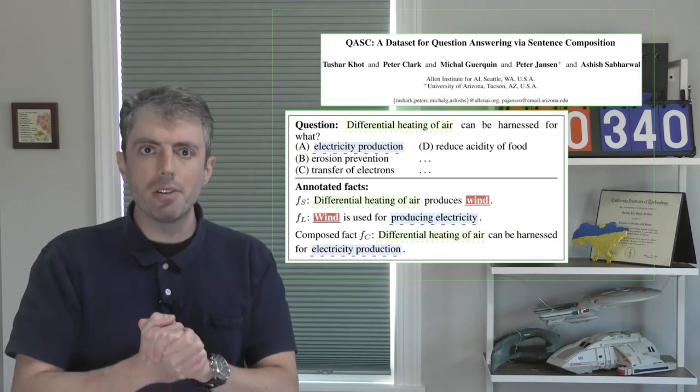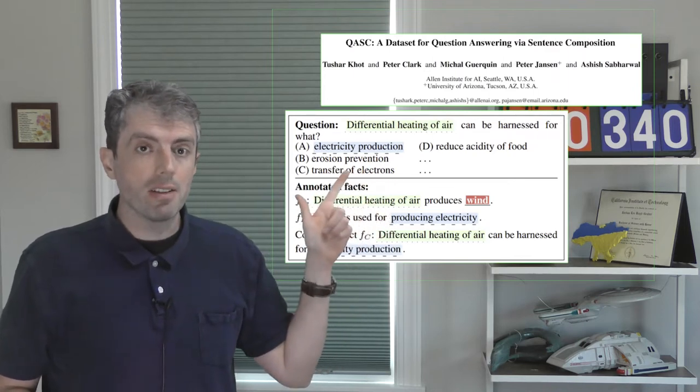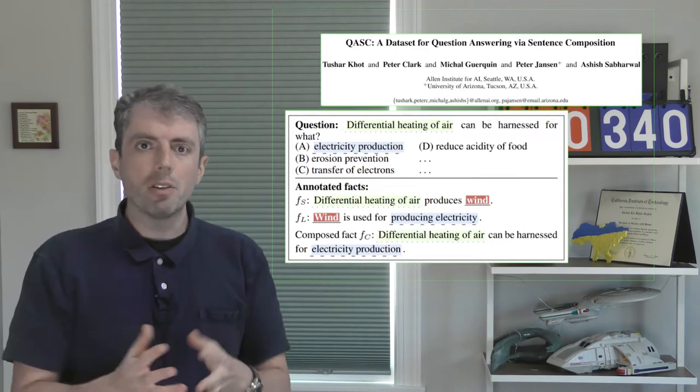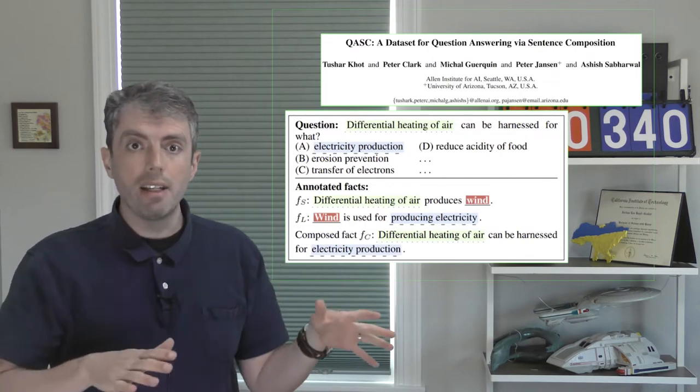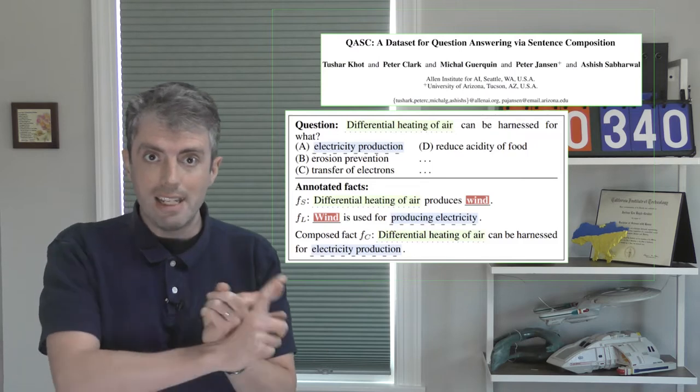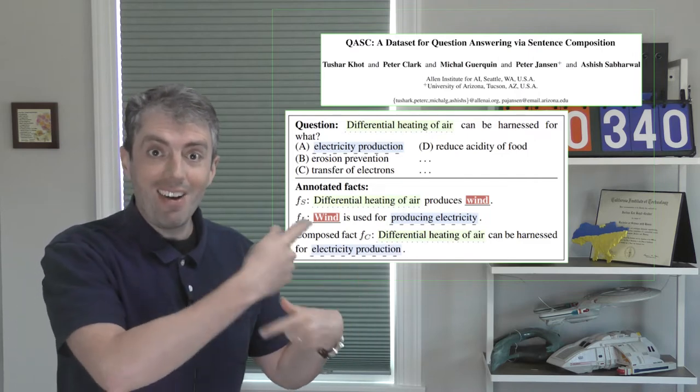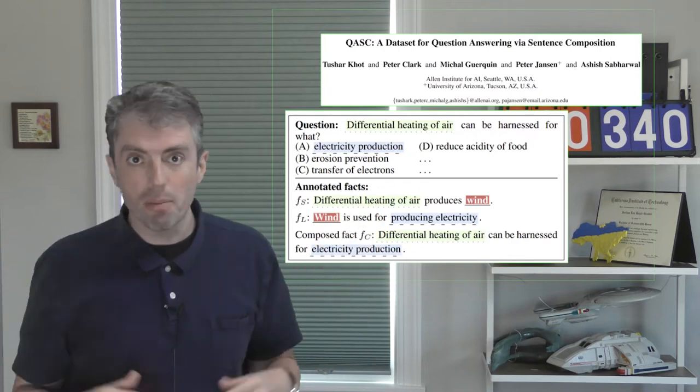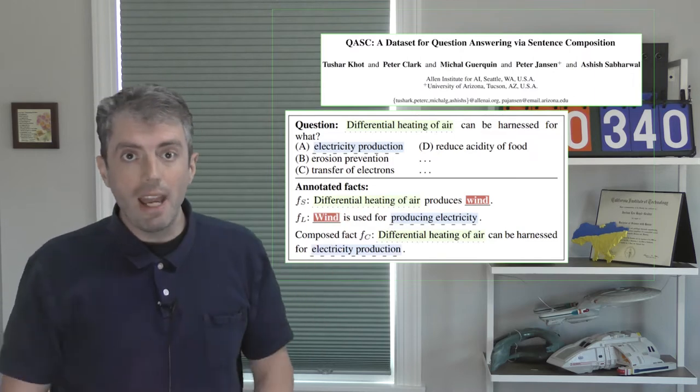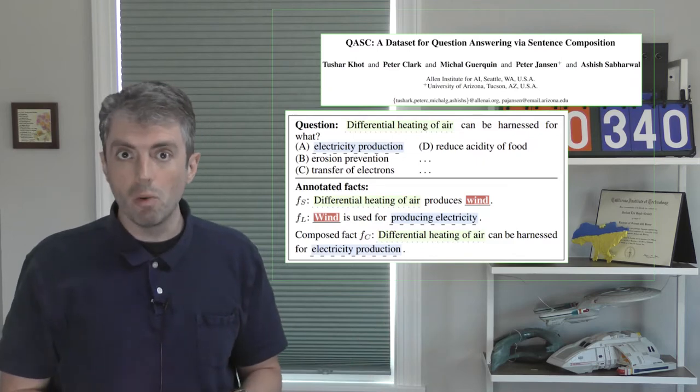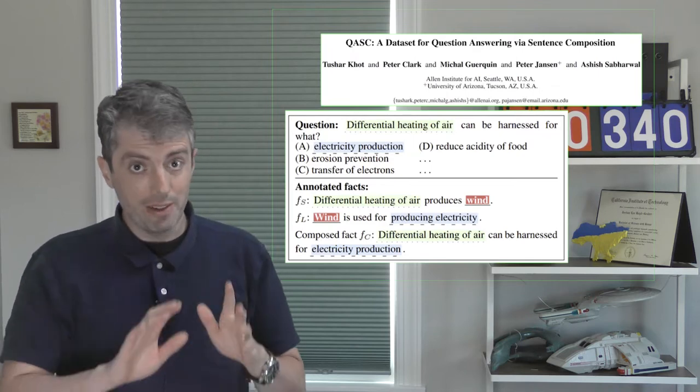Here's a similar paper whose major differences are that one, the questions are multiple choice, and that two, the explanations are declarative rather than interrogative. Given the original question, differential heating of air can be harnessed by what? They go out and annotate two sentences, one that says differential heating of air produces wind circulation, and the other says that once wind starts moving around, it can produce electricity by spinning the blades of a turbine. These sentences then entail a composed fact that allows you to answer the original question. And this improves a QA system, and you can imagine how it would help someone understand why a particular question has that answer. But again, they don't explicitly evaluate whether it helps a human.